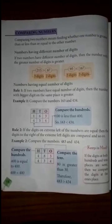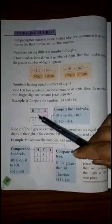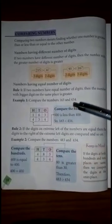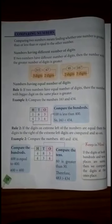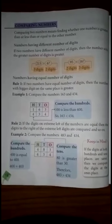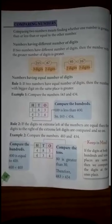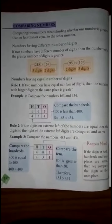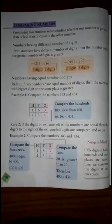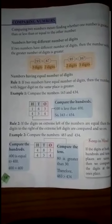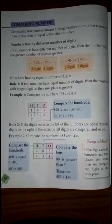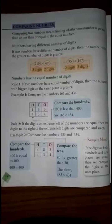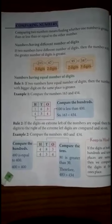Let's compare the numbers 163 and 434. We compare the hundreds place first. In 163, the hundreds digit is 1, and in 434, the hundreds digit is 4. Since 100 is less than 400, 434 is greater than 163.